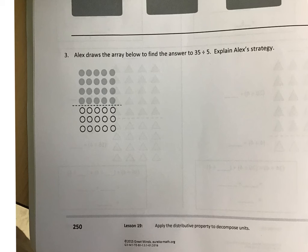The way that he's broken it up is he's taken 35 divided by 5. He's taken 35 and divided it into 2 parts. So this is 4 rows of 5, as you can see here. That's 20 total gray dots.